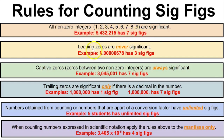Rule number two: leading zeros are never significant. Leading zeros are all the zeros that lead up to the very first non-zero integer. So all leading zeros here are never significant, meaning this number has three sig figs.